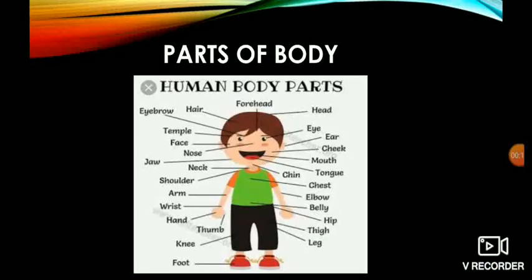Parts of body. As we all know, the human body consists of different parts like hair, forehead, head, eyebrow, temple, face, nose, eye, ear, cheek, mouth, tongue, chin, jaw, neck, shoulder, chest, arm, elbow, wrist, belly, hand, thumb, hip, thigh, leg, knee and foot.